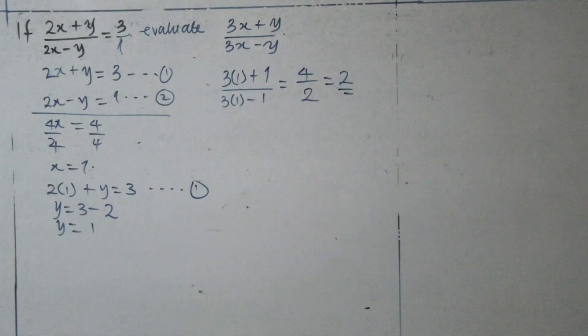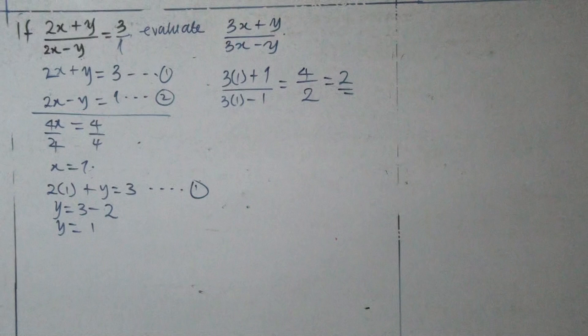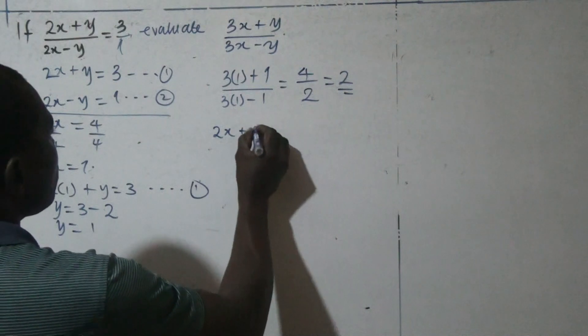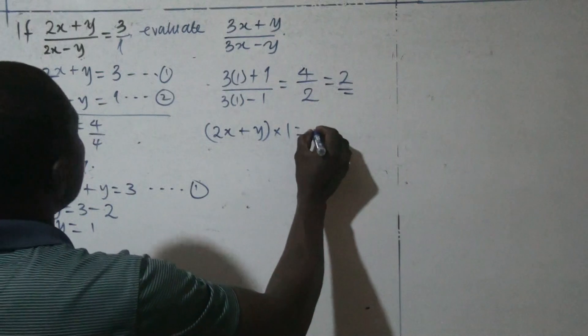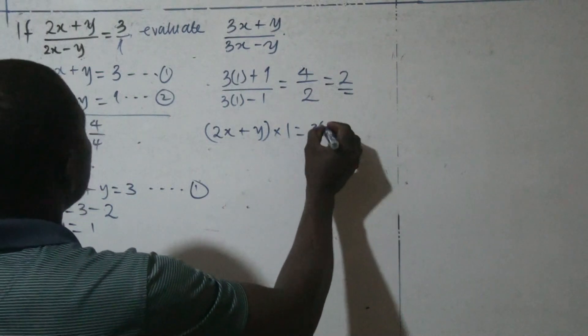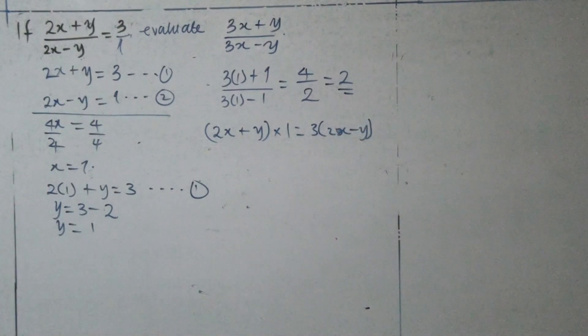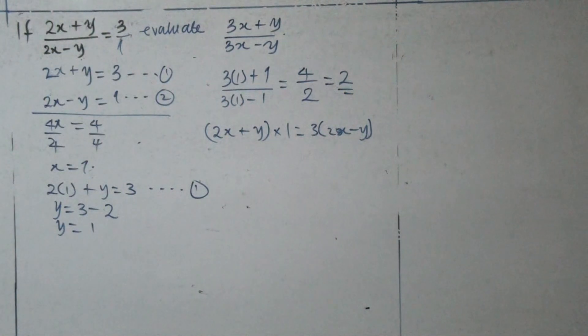That's the first method. On the other hand, if we want to do it, the second method is by multiplying through by the LCM, or we cross-multiply here. And this becomes, 2x plus y times 1 is equals to 3 times 2x minus y. We cross-multiply. This multiply this, and 3 will multiply the denominator. 1 multiply the numerator, and 3 multiply the denominator.